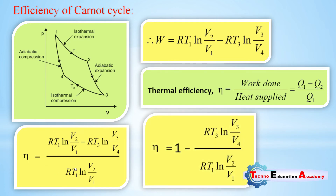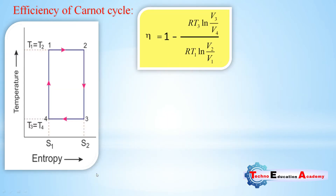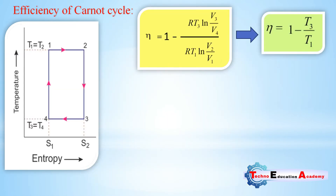Dividing separately, we divide both numerator terms by RT1 ln(V2/V1). Continuing from the previous equation, we can simplify this expression to obtain the next form of the efficiency equation.